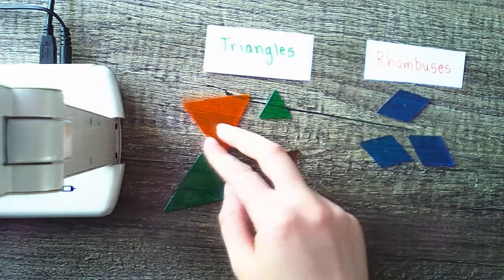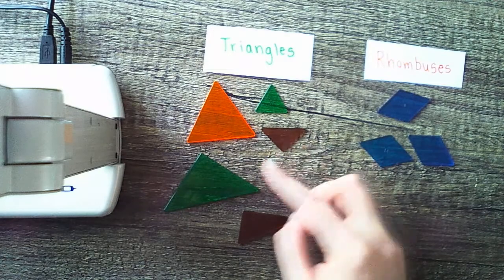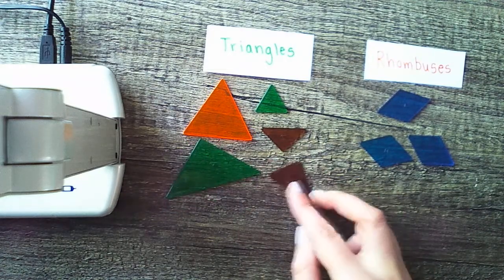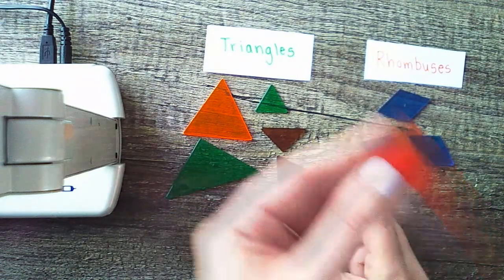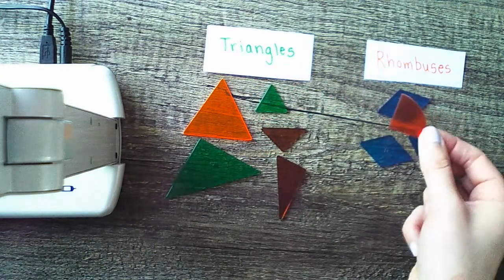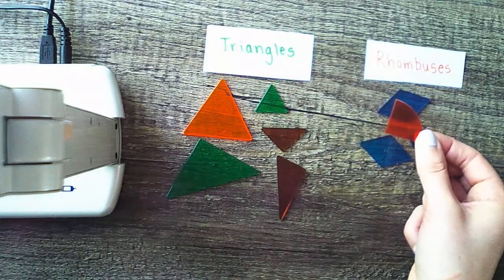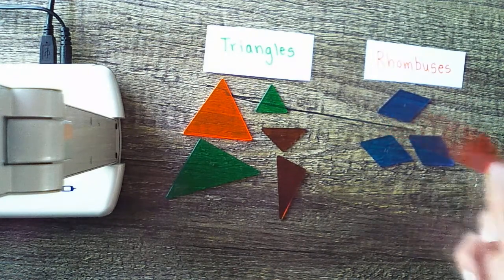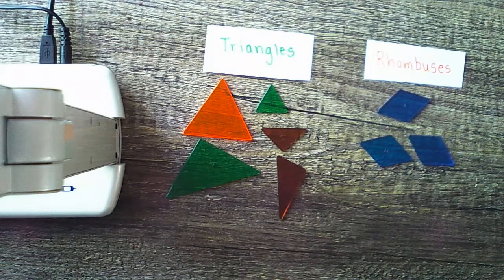Triangles don't have curves. Let's look at all of our triangles that we have down here. Yes, they have 3 sides and 3 vertices, but all of their sides are straight, not curved. So this is not a triangle. And it can't be a rhombus because rhombuses have to have 4 sides and 4 vertices. So it doesn't belong to either.